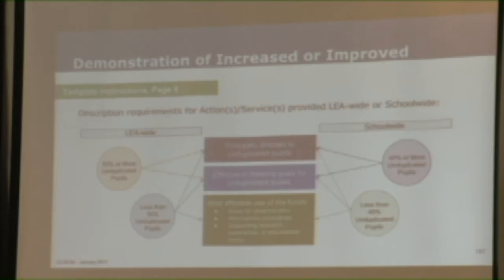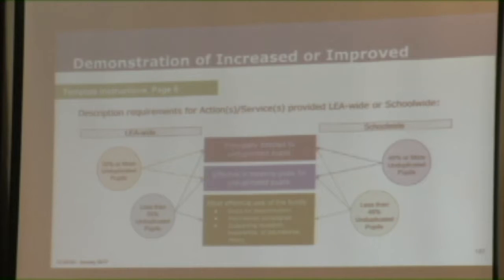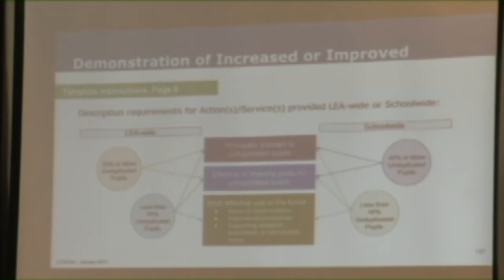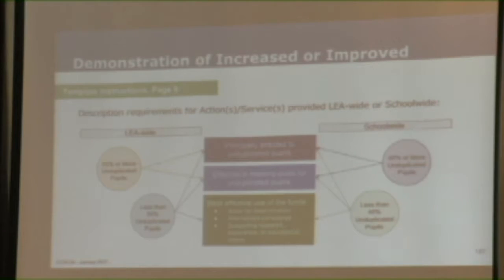I wanted to go back to the prior slide. While we're looking at this one, I wanted to bring to your attention why all three boxes are here instead of just two. As we look at this example, it's a 38% unduplicated pupil percentage. So that means, and they're using a school-wide approach, so looking at this chart, that means it's going to be the right-hand side, pointing to three arrows, meaning you really need to look at all three of these boxes for the description requirements. Had this number been over 40%, we'd be only looking at the top two for the unduplicated count.